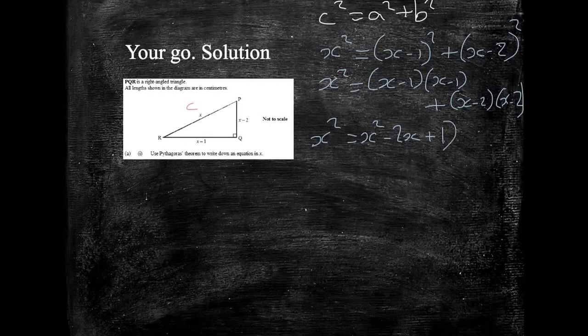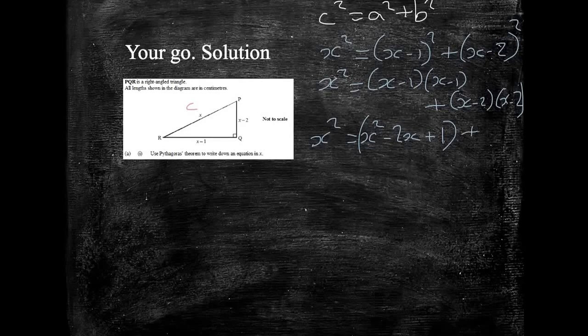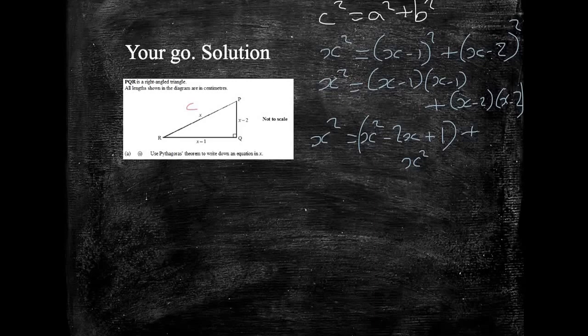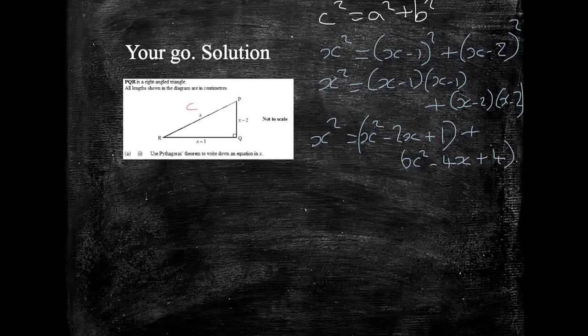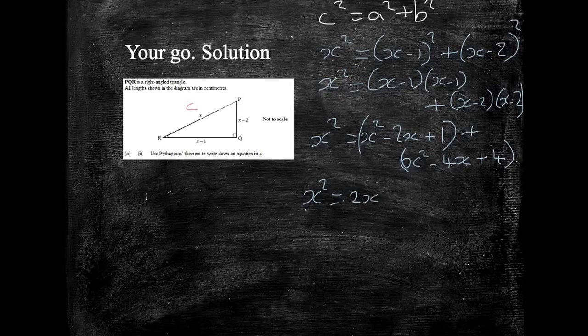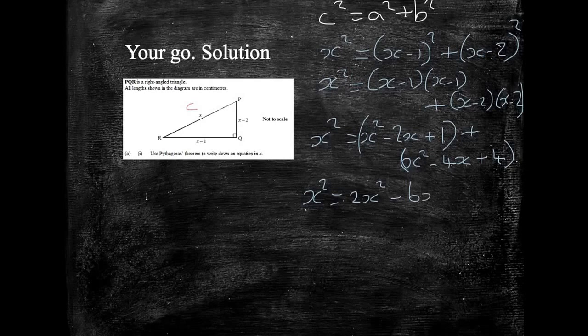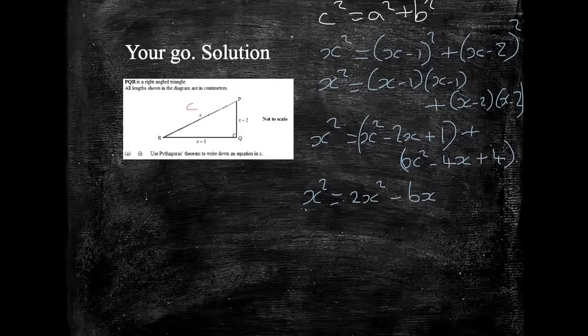At this point, it's important to remember that these brackets here, you can't just do X squared minus 1 squared. You've got to remember that this is X minus 1 multiplied by X minus 1. So we've got X squared equals X minus 2 multiplied by X minus 2 plus X squared minus 2X plus 1. Collect all my like terms together. So X squared equals 2X squared minus 6X plus 5.